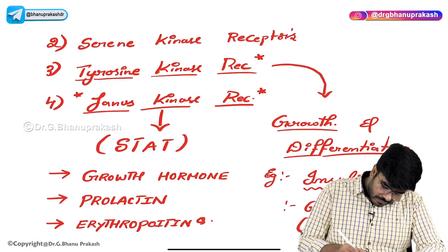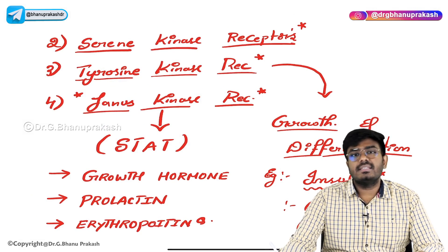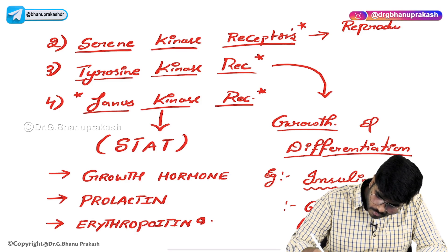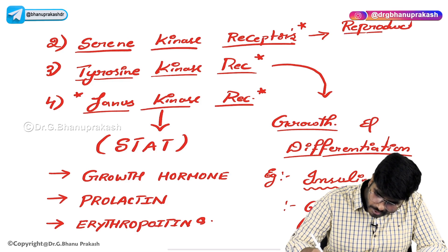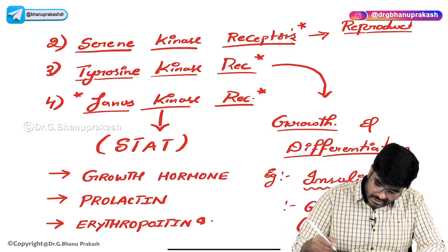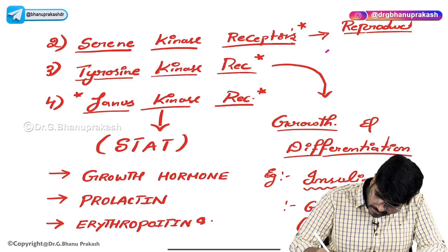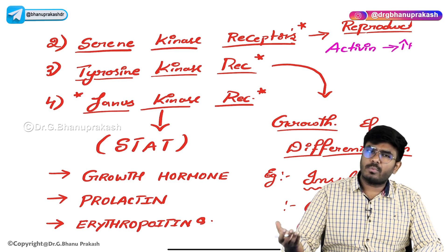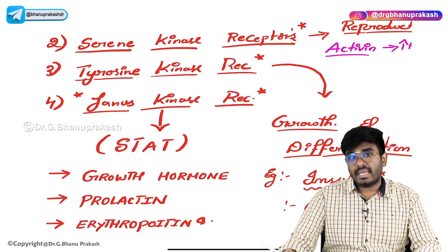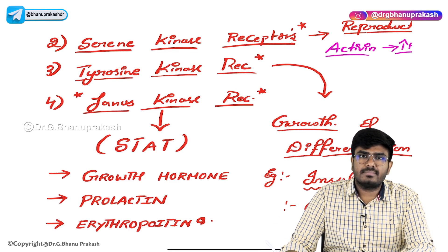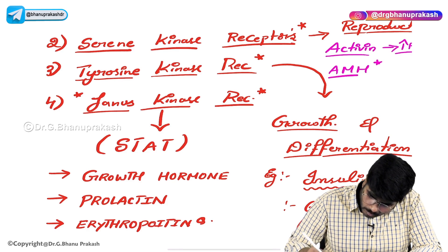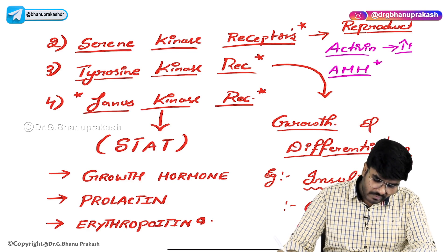The last group of receptors is serine kinase receptors. Serine kinase receptors are involved in reproduction. They are used by hormones like activin — activin increases FSH levels, and follicle-stimulating hormone is involved in reproduction. Activin acts on serine kinase receptors and increases FSH levels. The second type of hormone is anti-Müllerian hormone, which also uses serine kinase receptors.